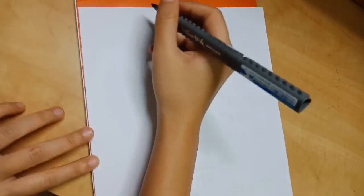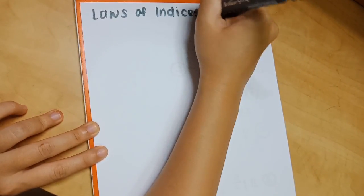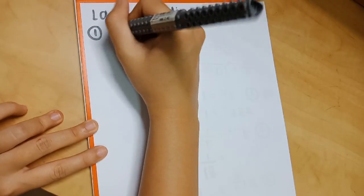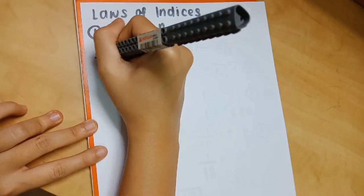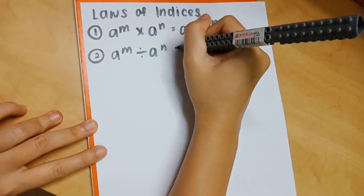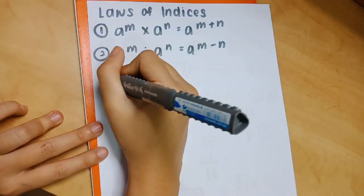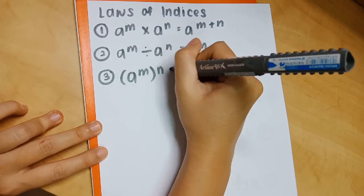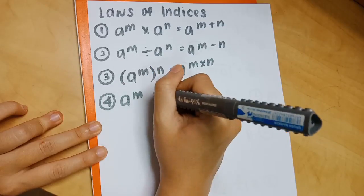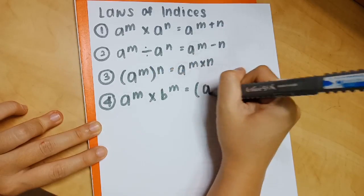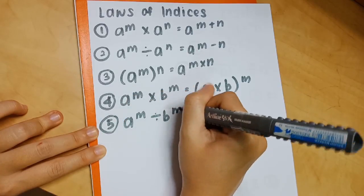There are five laws of indices you need to know. Law 1: a^m × a^n = a^(m+n). Law 2: a^m ÷ a^n = a^(m−n). Law 3: (a^m)^n = a^(m×n). Law 4: a^m × b^m = (a×b)^m. Law 5: a^m ÷ b^m = (a/b)^m.